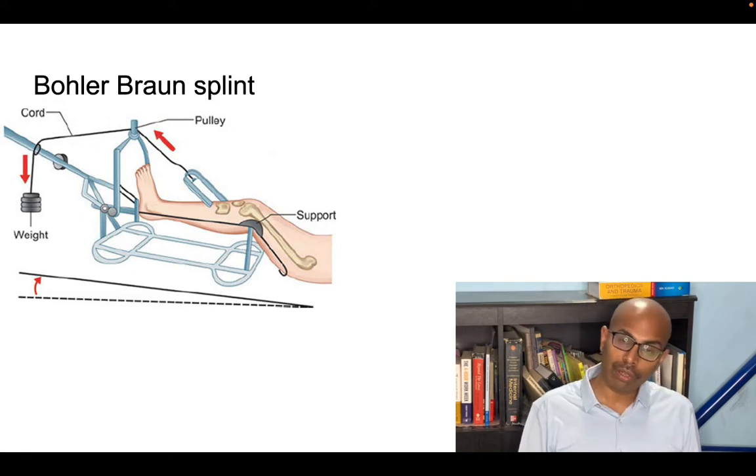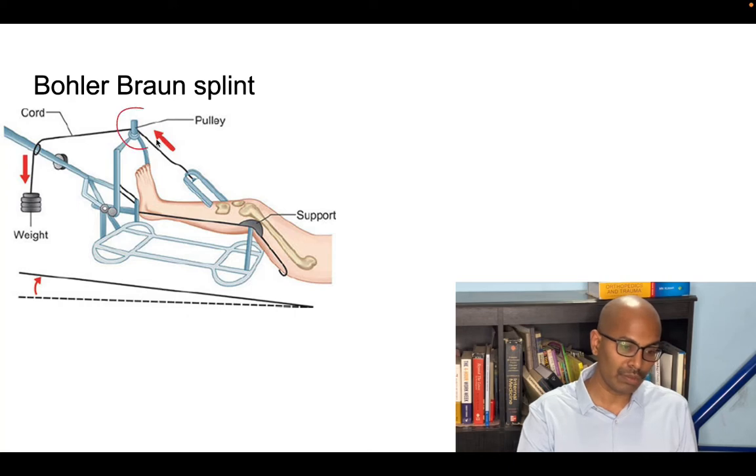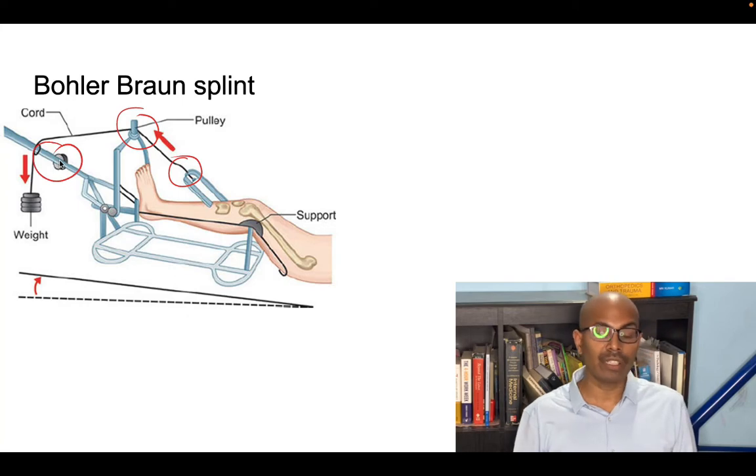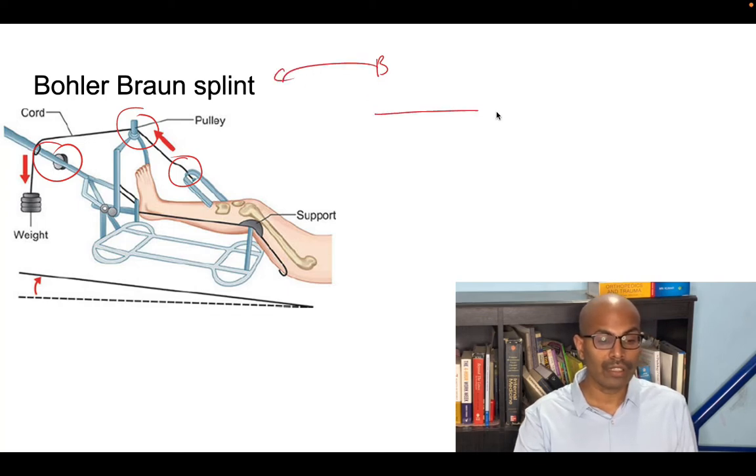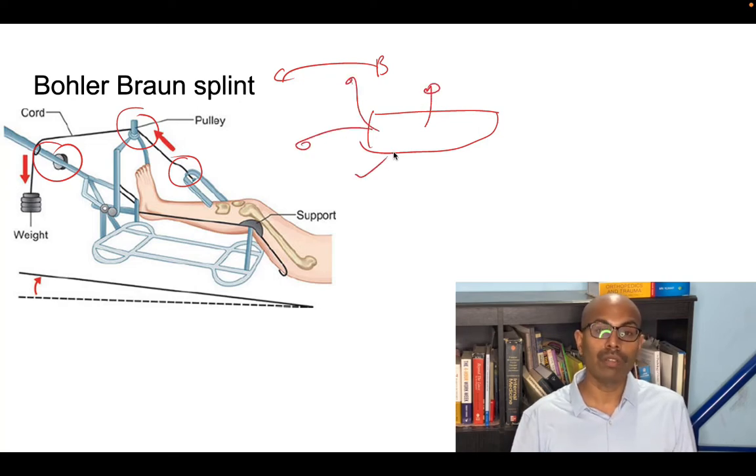Next we have the Bohler Braun splint. This has also been frequently asked. It has multiple pulleys, at least three pulley systems - one pulley here, one pulley here and the third pulley here. You can put various kinds of weights and tractions in the splint for femur, tibia and all kinds of lower limb fractures and injuries. How do you recognize Bohler Braun splint? When you see a tray or a traction system with three pulleys on different directions, it is called as a Bohler Braun splint.